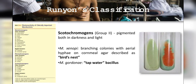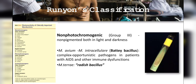Group 2 — scotochromogens: NTM colonies that develop pigment in the dark or light and take longer than 7 days to appear on solid media. Mycobacterium szulgai has branching colonies described as bird's nest colonies, and Mycobacterium gordonae is also known as the tap water bacillus. Group 3 — non-photochromogens: NTM colonies that are non-pigmented regardless of whether grown in the dark or light and take longer than 7 days to appear on solid media. M. tuberculosis belongs to non-photochromogens. M. avium-intracellulare complex is also known as the battey bacillus, and M. terrae is known as the radish bacillus.